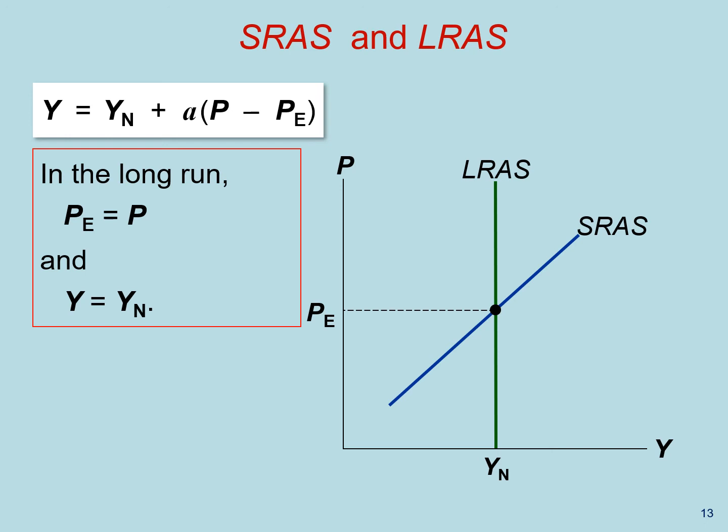In the short run, people may be fooled about the price level or they may be locked into wages or prices they were set before they knew what the actual price level would be. Hence, in the short run, P may be different from P sub E.